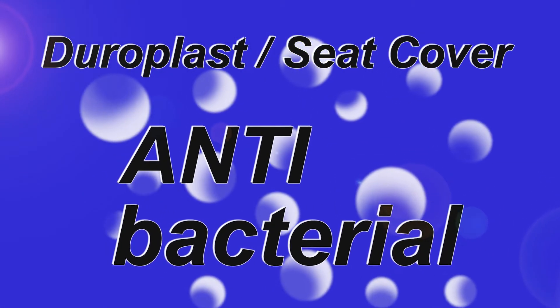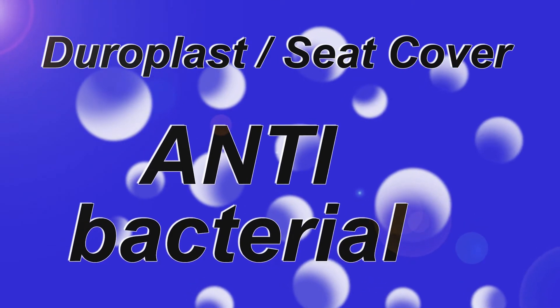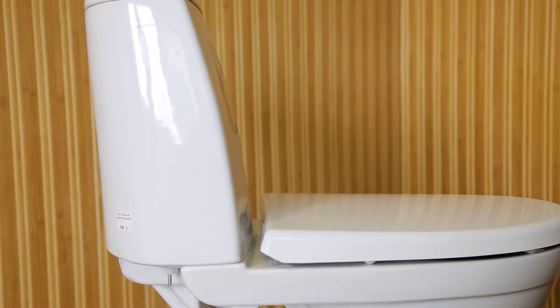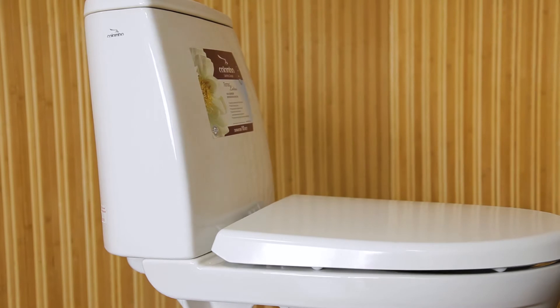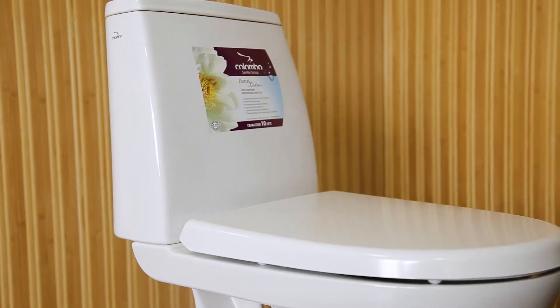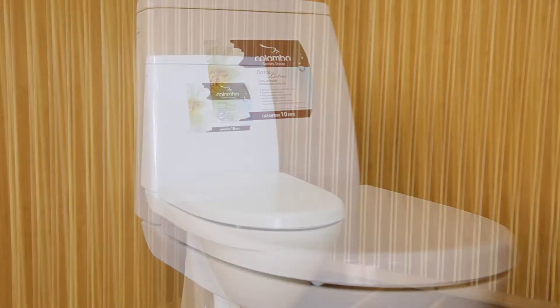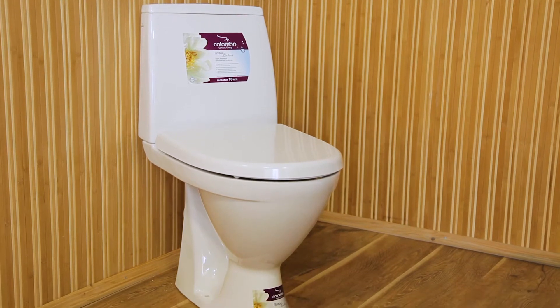Dear gentlemen, we propose you to look at our product, a toilet seat which is made for the factory producer. Duraplast is a hard and durable material, steady to mechanical damage. Its advantages are an antibacterial surface with silver ion additives.